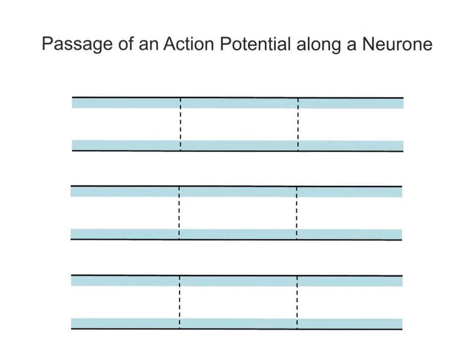And in that video I actually said that nothing physically moves down the length of the axon of the neuron when this nerve impulse or action potential actually gets transmitted. It's all through the movement of sodium and potassium ions essentially in and out along the length of this particular axon. So let's speak about how we're going to get this action potential from one end of the axon to the other.